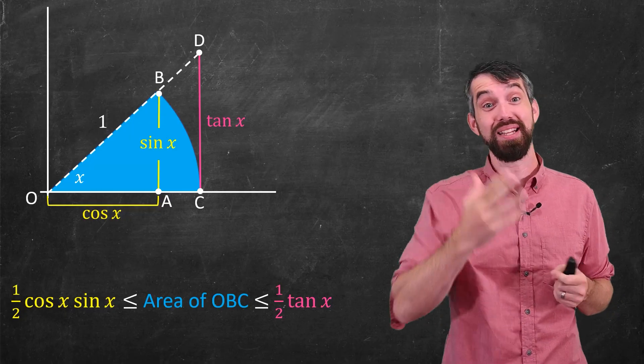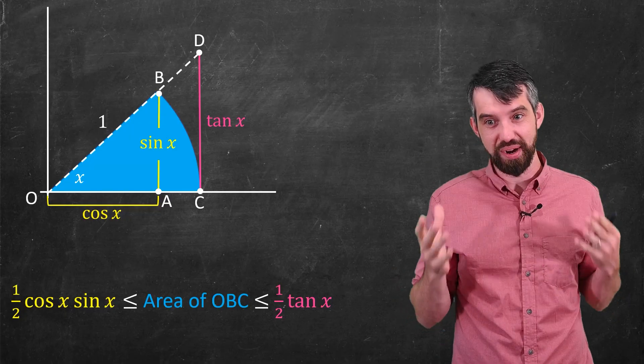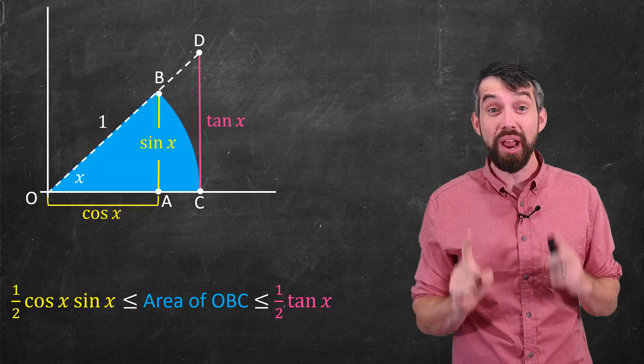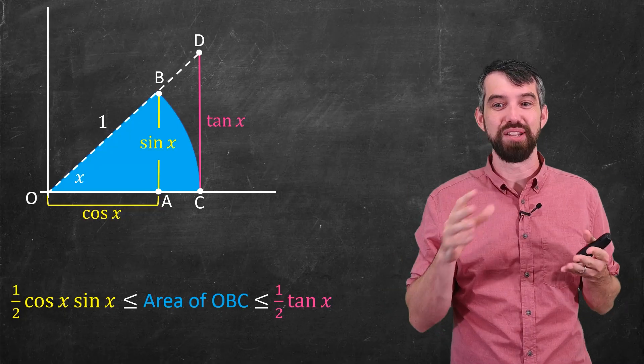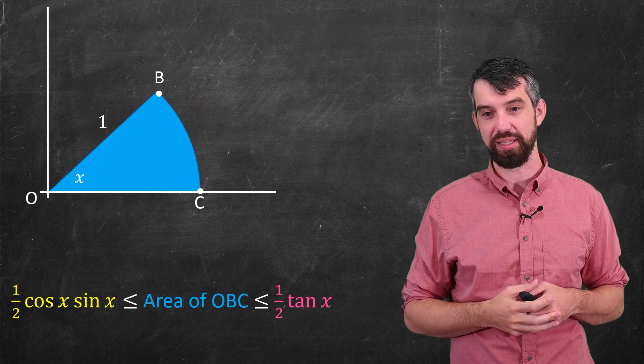So I've taken the pizza slice and I'm squeezing it in between these two other triangles. You might already be guessing I'm going to be taking some limit as x goes to zero soon enough. But I have to figure out the area of that pizza slice of the OBC.